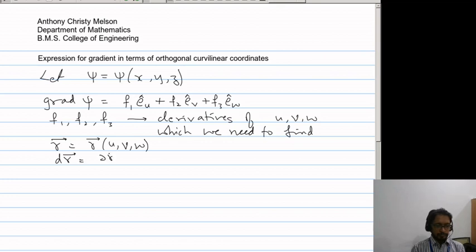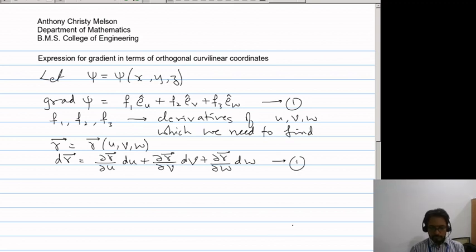Now r is a function of u, v, w. Therefore, dr is ∂r/∂u into du plus ∂r/∂v into dv plus ∂r/∂w into dw. We will call this as equation 1. So dr reduces to h1 e_u du plus h2 e_v dv plus h3 e_w dw.